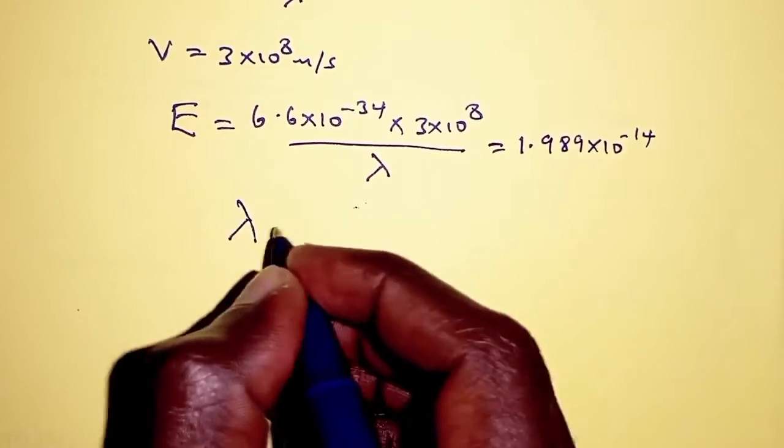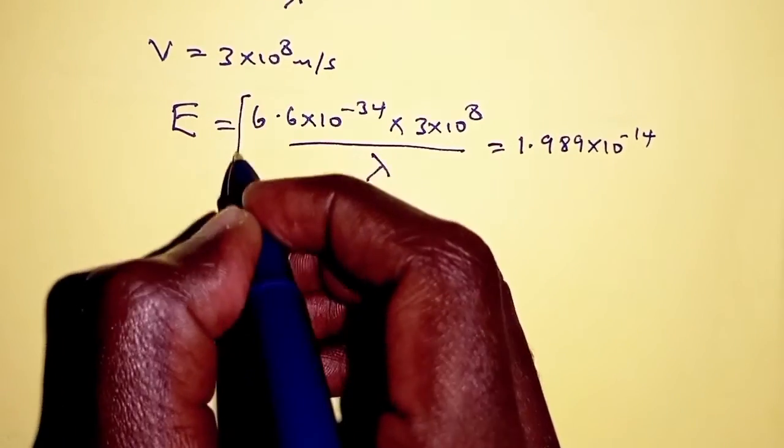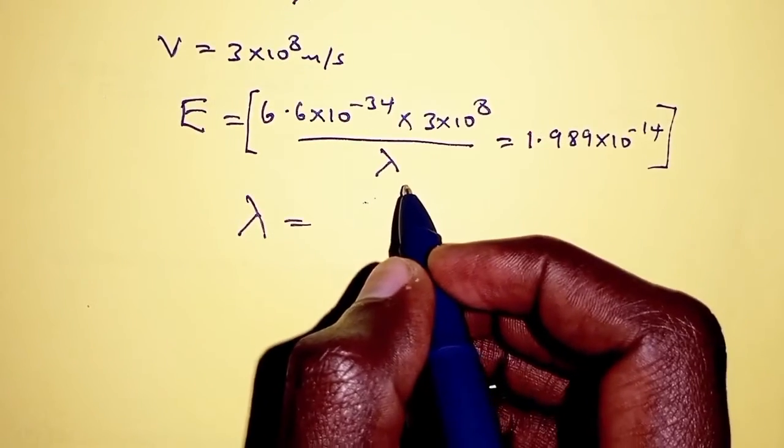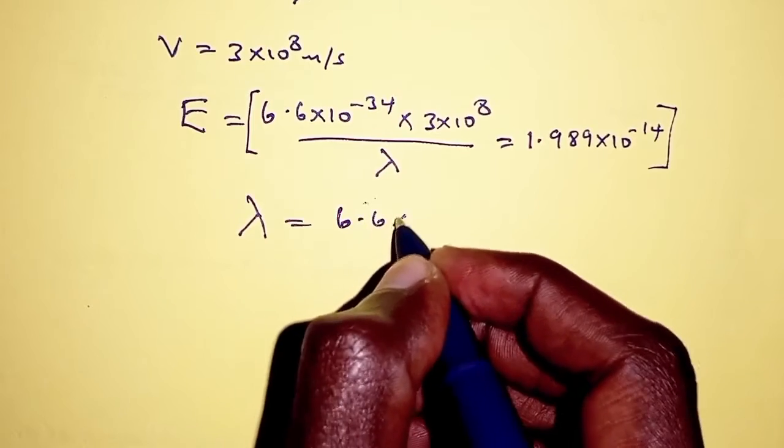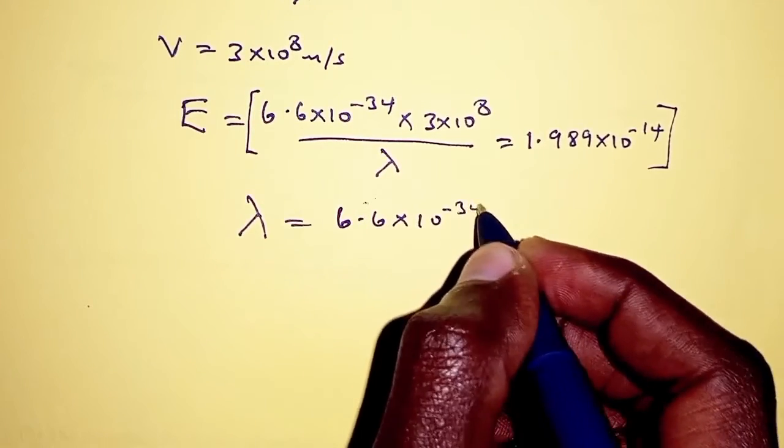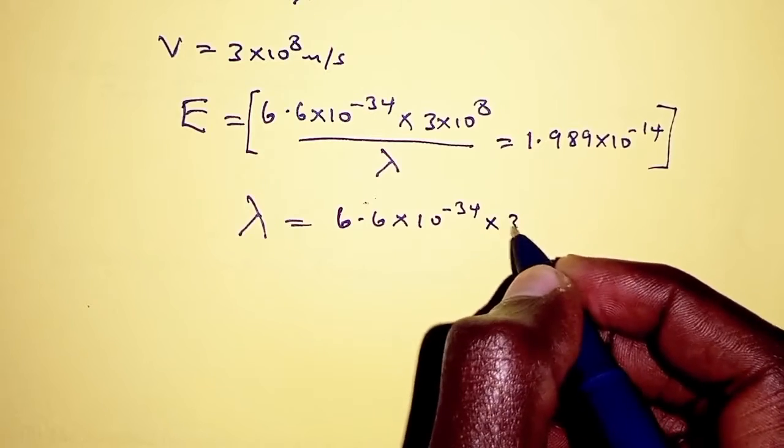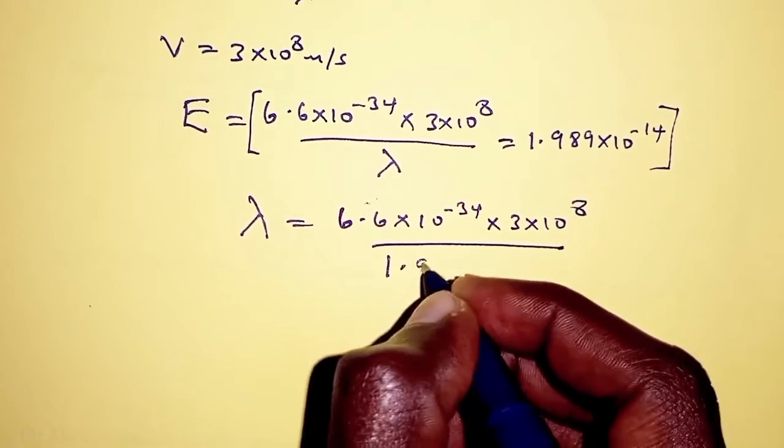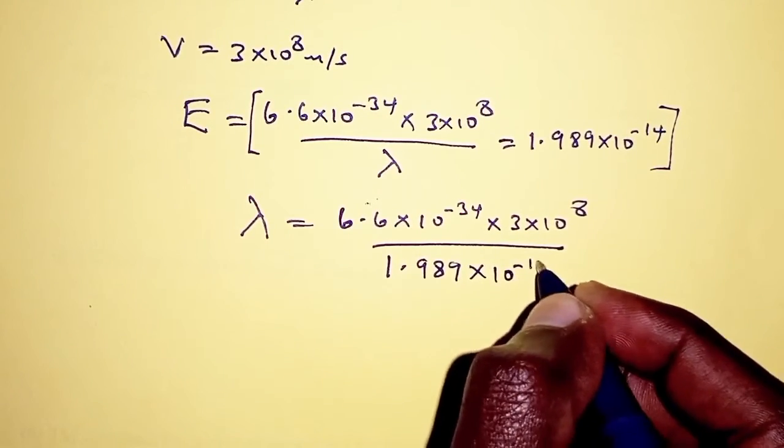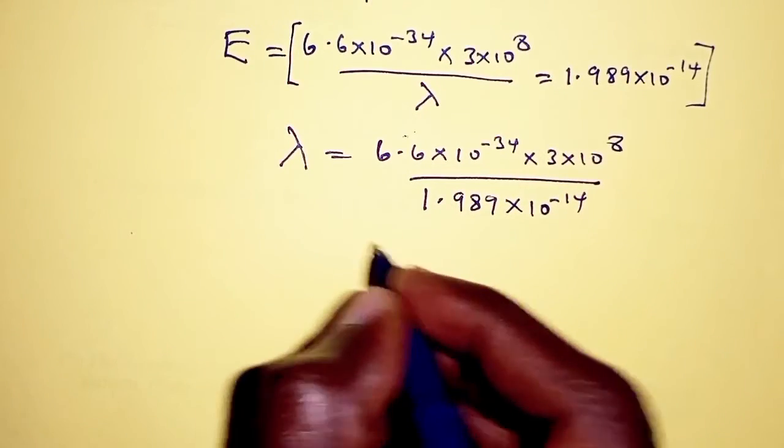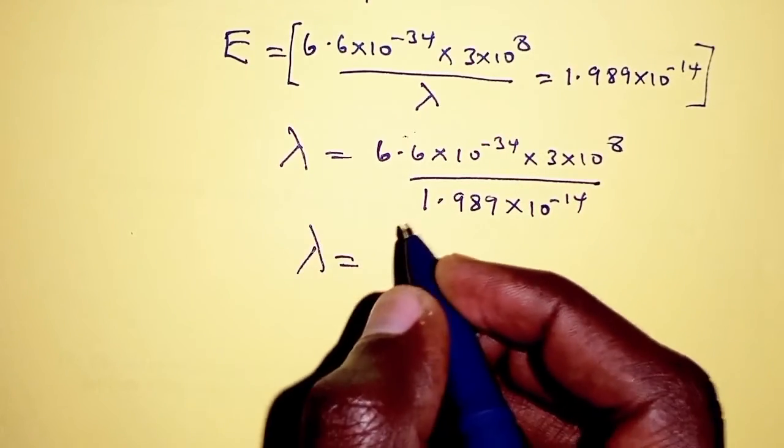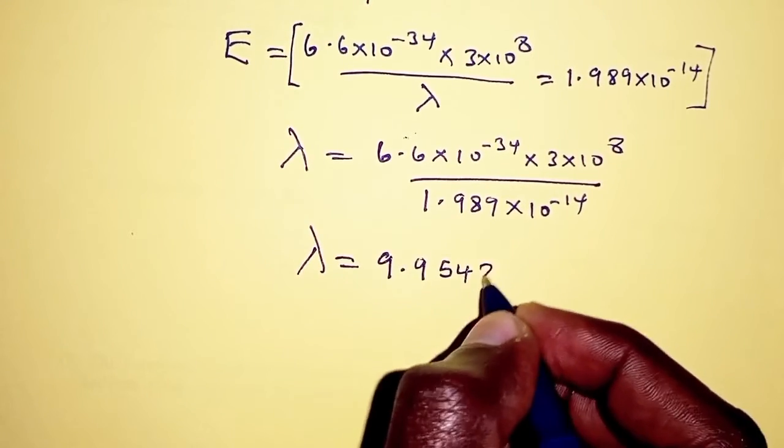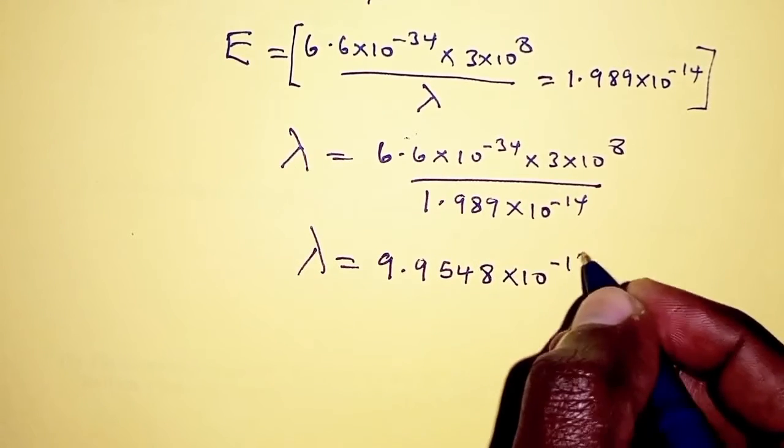In order to determine lambda, we rearrange the equation. Lambda becomes 6.6 times 10 power negative 34 times 3 times 10 power 8, all divided by 1.989 times 10 power negative 14. So when we work this out on the calculator, I get the wavelength as 9.9548 times 10 power negative 12 meters.